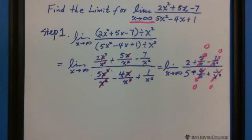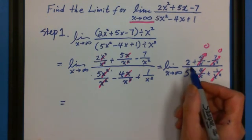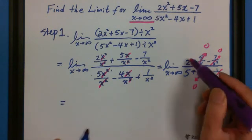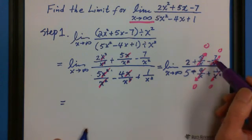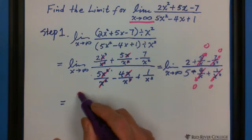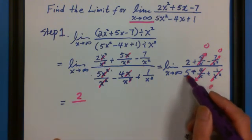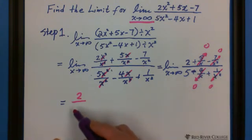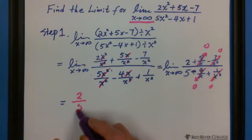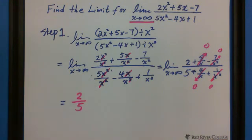So as a result, this question we can say only this one, only this one. Because 2 plus zero minus zero equals 2. The bottom minus zero plus zero is 5. So this is the answer.